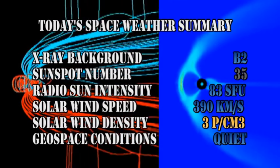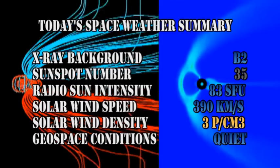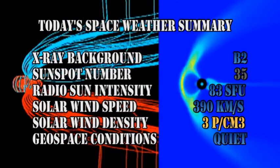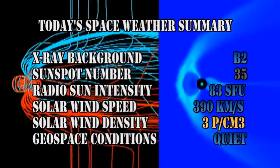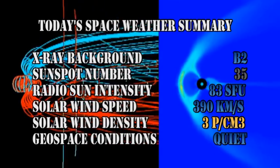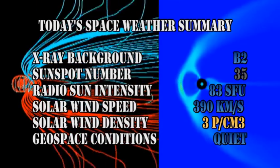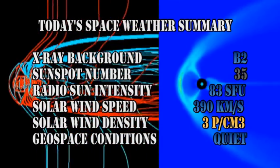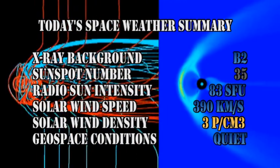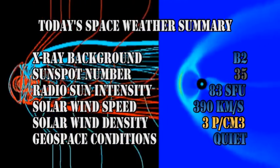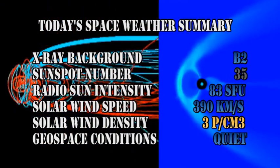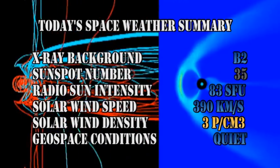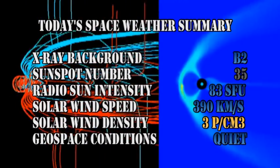In summary, the X-ray background has risen to the B2 level. The sunspot number is claimed to be 35, but I cannot find any sunspots on the sun whatsoever. The radio sun intensity is at 83 solar flux units. The solar wind speed has risen to 390 km per second, with a density of about 3 protons per cubic centimeter, and geospace conditions are quiet.